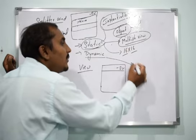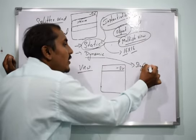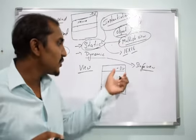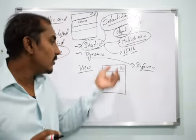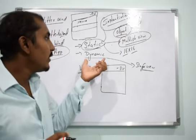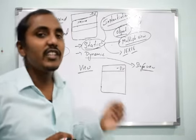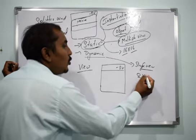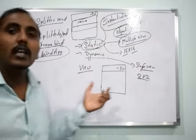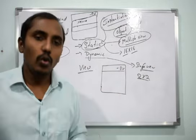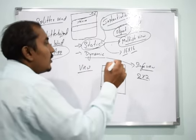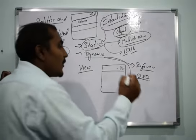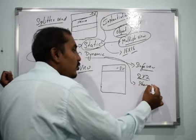A Dynamic Splitter Window supports only a single view — for example, the Project Explorer shows only project-related information. Dynamic Splitter Windows can have a maximum of 2 rows and 2 columns. Another key difference is that a Dynamic Splitter Window shares a scroll bar between its panes.